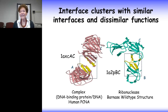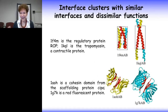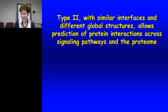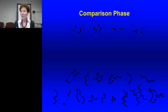Examples of interface clusters with similar interfaces — you can see similarity in structures on the inside. The similar global folds of the proteins and similar functions are also apparent. The preferred interface structures are the same ones preferred in single chain proteins. Type two, with similar interfaces and different global structures, allows prediction of protein interactions, signaling pathways, and the proteome. The last example shown includes a cohesin domain from a scaffolding protein and a red fluorescent protein, illustrating that similar interfaces can occur across functionally diverse proteins.